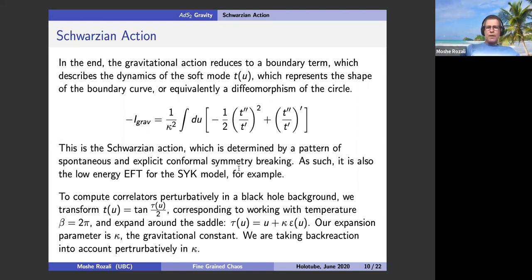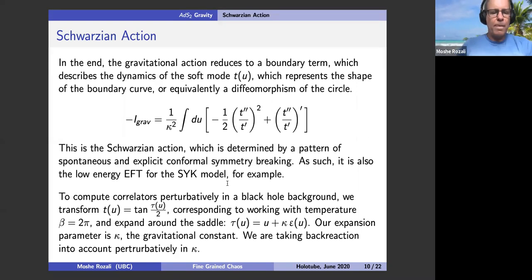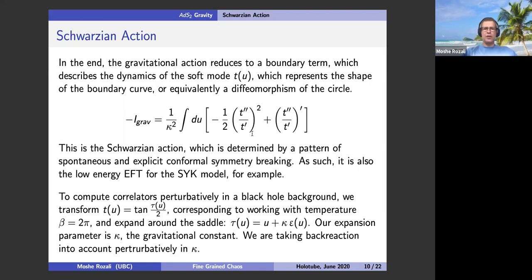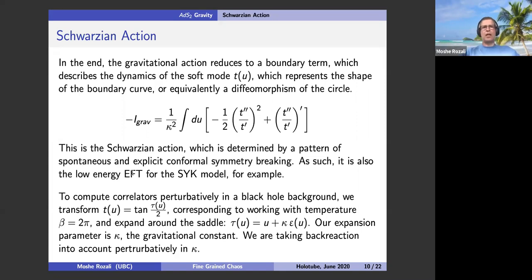The Schwarzian action appears in many contexts, partially because it's determined only by symmetries: if you have a conformal field theory with a particular pattern of explicit and spontaneous breaking — which is the case both in JT gravity and in SYK — you're guaranteed to get that action. This is the paradigm of what I call a soft mode action. You can calculate out-of-time-order correlators without knowing the full microscopic physics, just by focusing on this one single low-energy mode. You do perturbation theory: impose the correct boundary conditions, transform T to the tangent of tau for correct Euclidean periodicity, and perturb around the solution tau(u) = u.